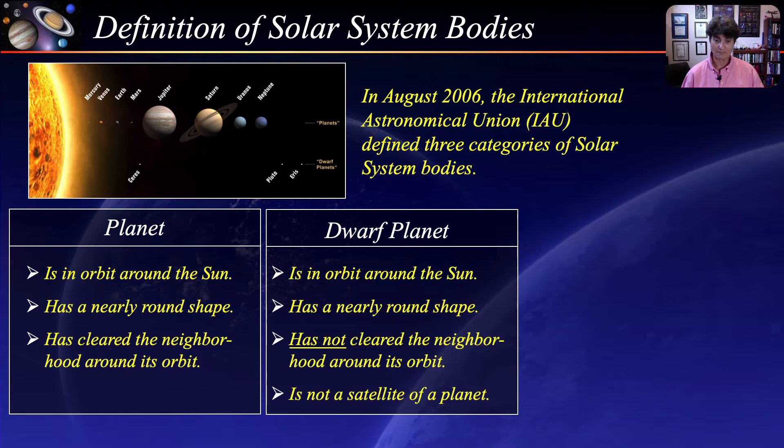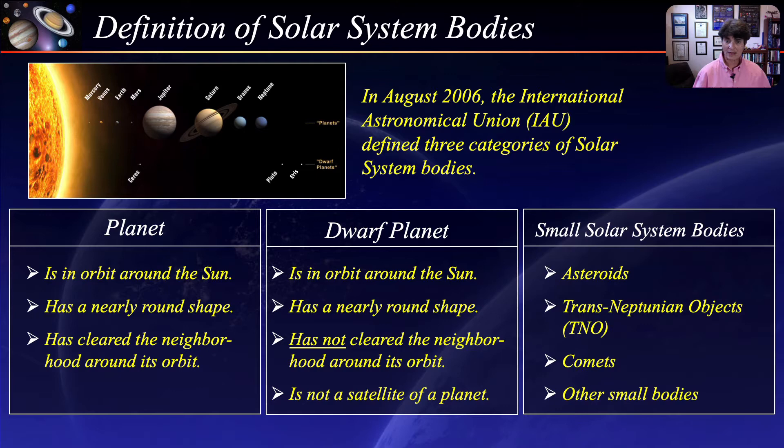There are currently five dwarf planets: Pluto, Ceres, Eris, Haumea, and Makemake. But other known objects might be reclassified as dwarf planets in the near future. All other objects, except satellites orbiting the sun, are referred to collectively as small solar system bodies. These objects currently include asteroids, most trans-Neptunian objects, comets, and other small bodies.